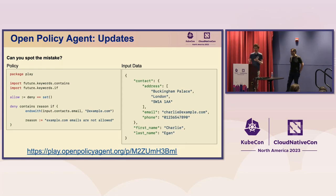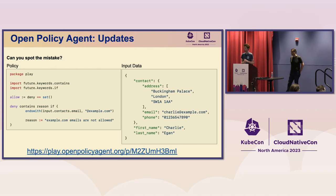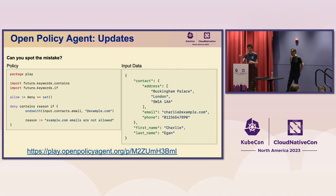Here's a little demo scenario — can anybody spot the mistake in this policy? The input is on the right, the policy is on the left. Allow is being set to true when we expected it to be false. The answer: the data has 'contacts' instead of 'contacts' — a subtle typo. Because the data provided isn't in the expected format, we allow a request through that we didn't intend to. The json.match_schema function is a good way to make sure the data you're operating on in a rule is actually as you expect.